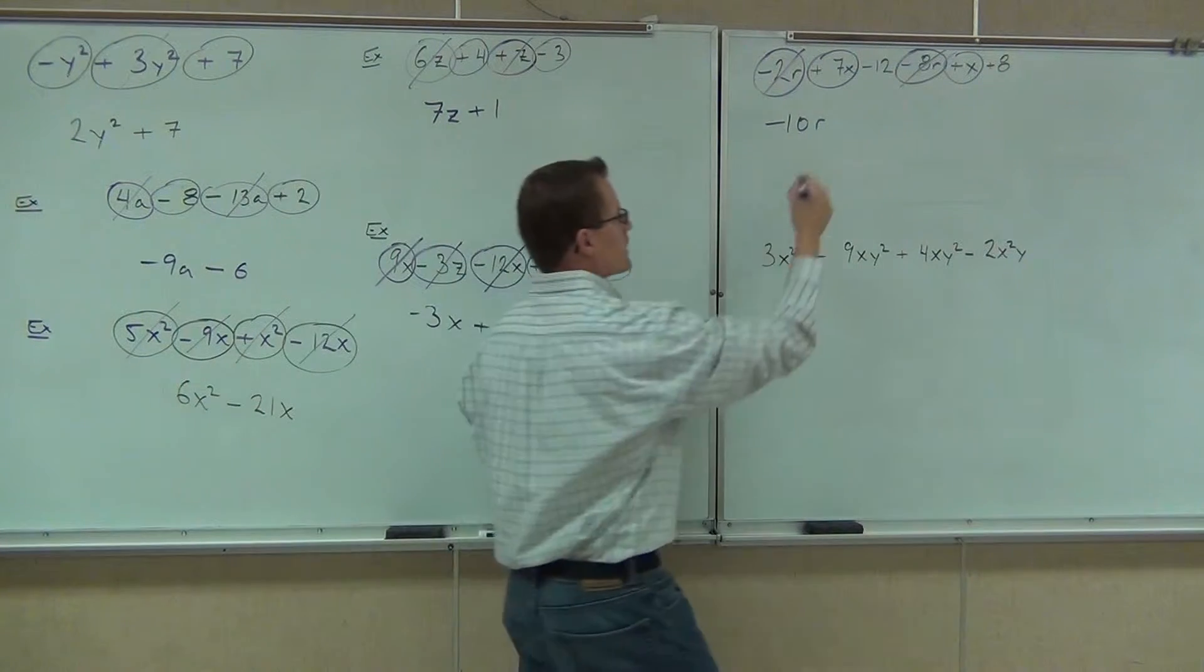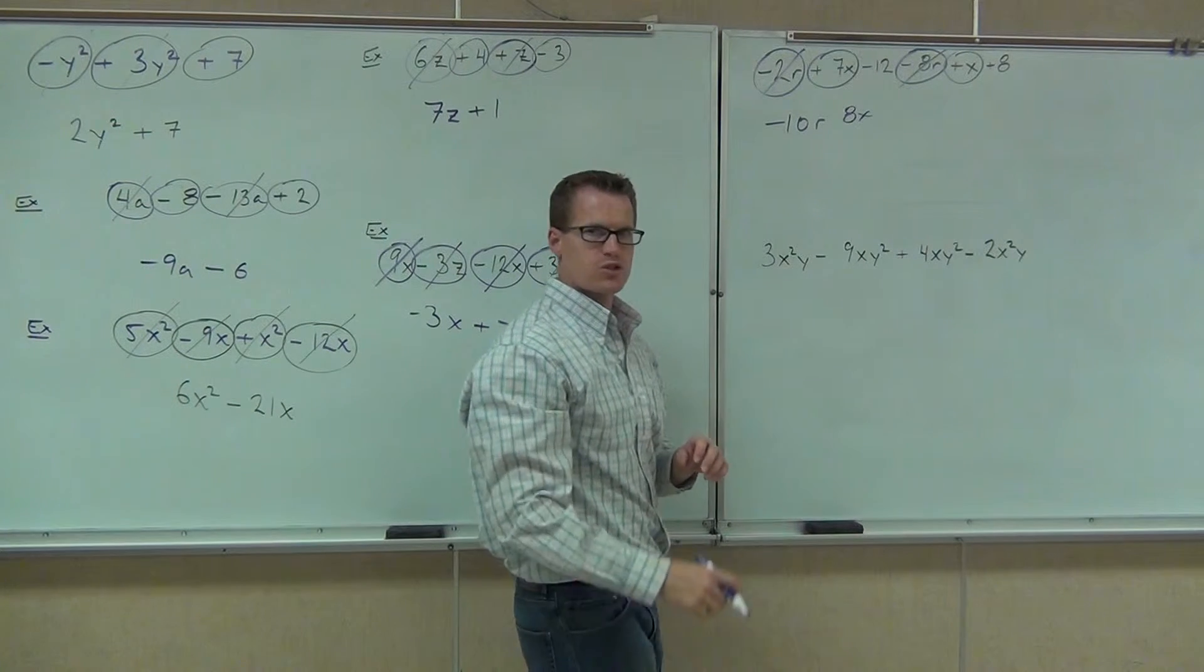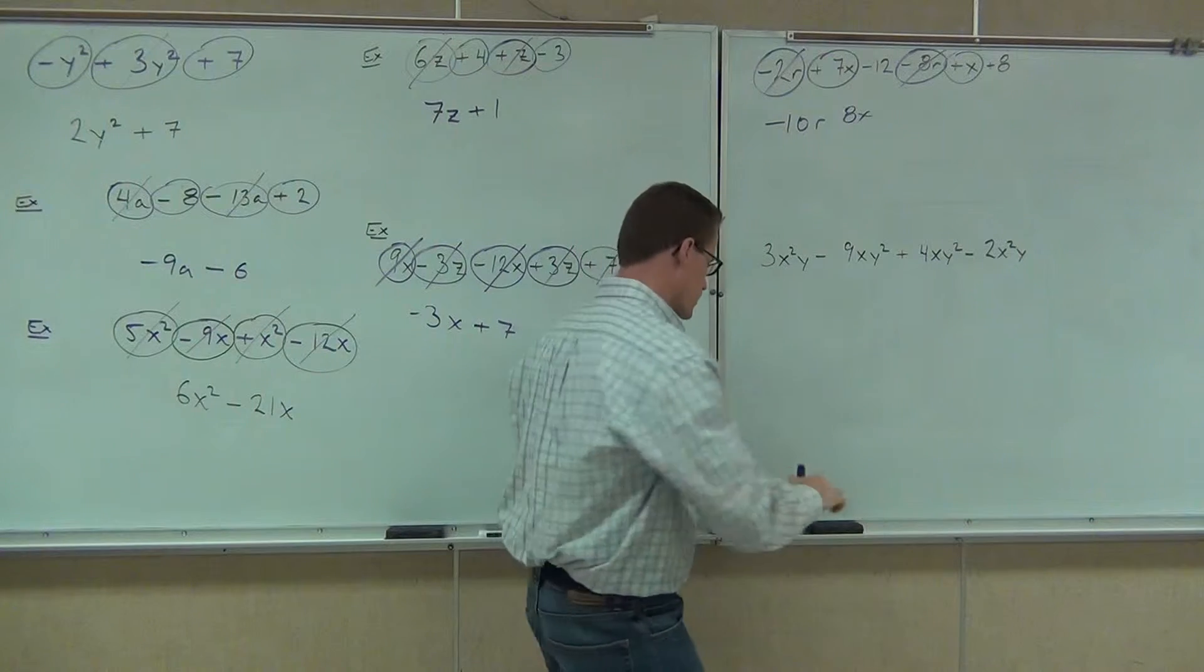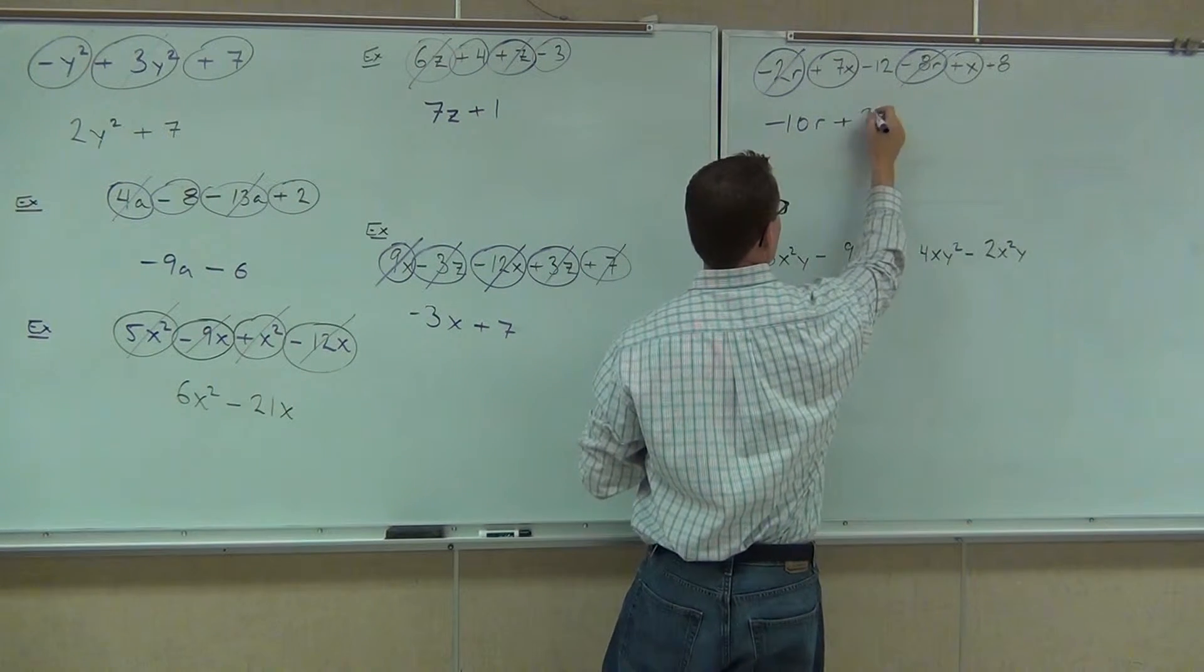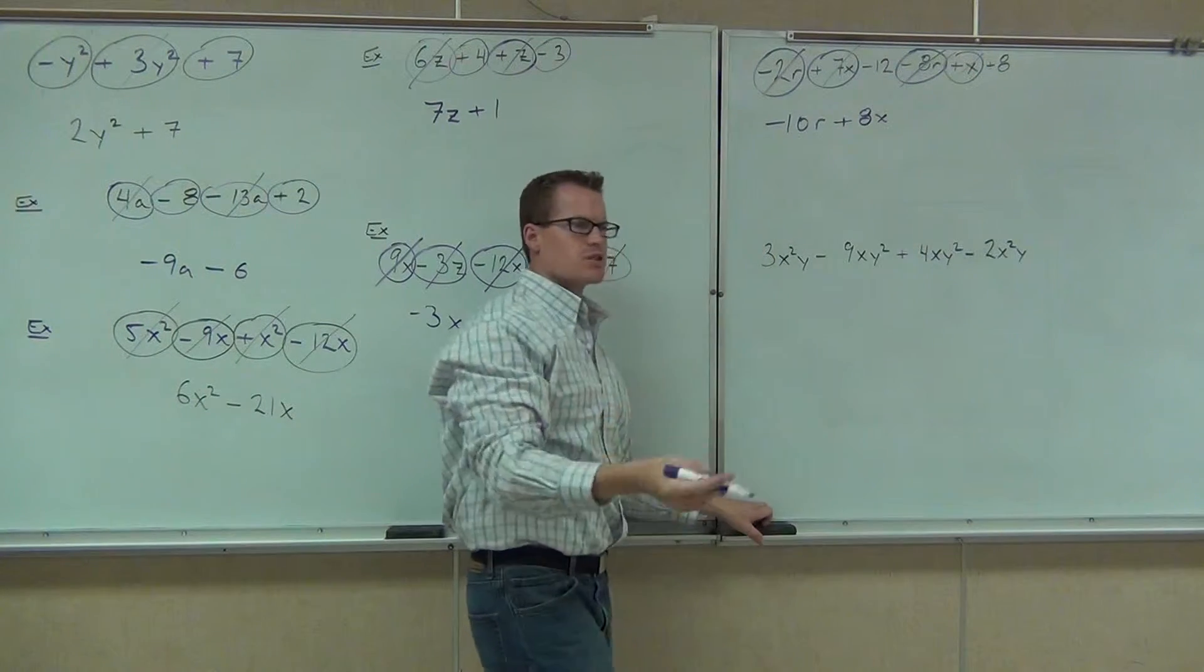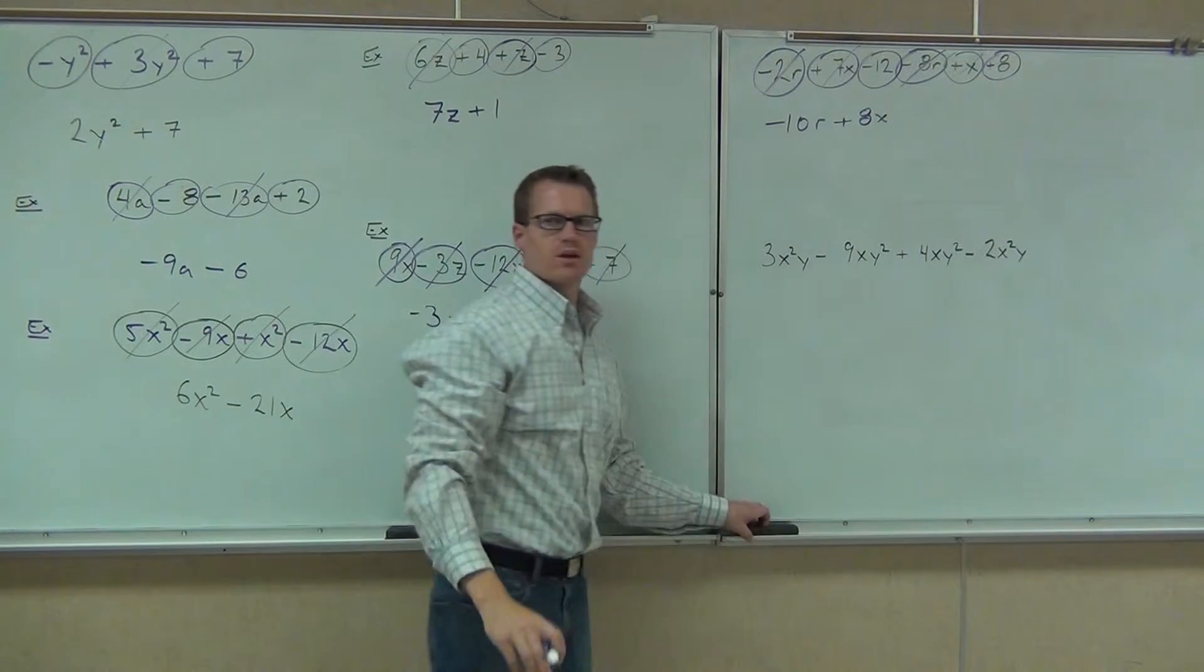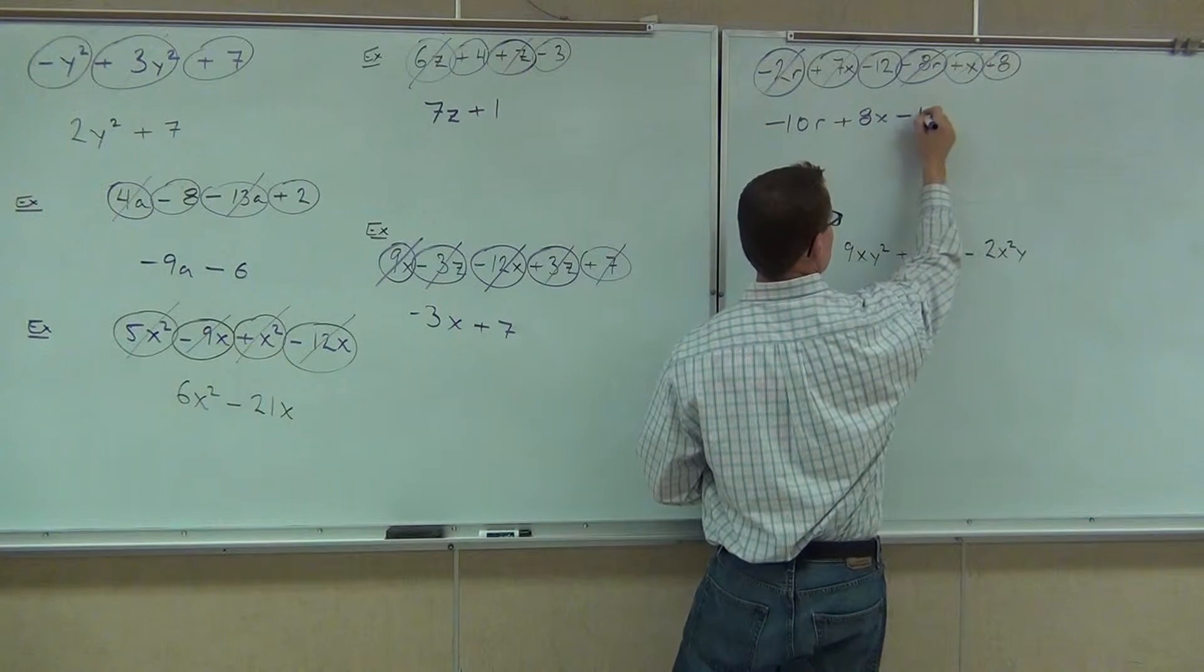Negative 2r and negative 8r will combine using addition rule. That's going to start us out. That's gone. Next up, I look for my next term in line. I have a plus 7x. I circle the term with the sign. So I'm going to circle that with the sign. I've got 7x. I've got x. That gives me 8x. Plus 8x.